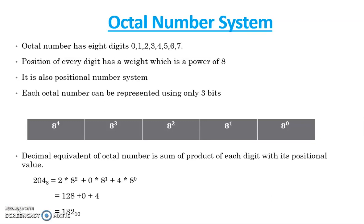Octal number system has 8 digits: 0, 1, 2 up to 7. Position of every digit has a weight which is a power of 8. It is also a positional number system.